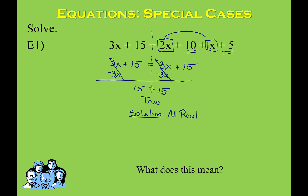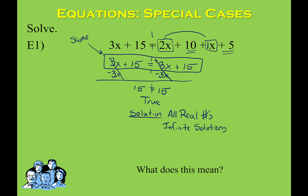The textbook calls it infinitely many solutions. What that means is that I can substitute any number into that equation — a negative number, a positive number, a square root, even pi — and the left and the right side will be the same. You could have recognized this earlier: 3x plus 15 will always equal 3x plus 15 no matter what you substitute in for x, because you're doing 3 times x plus 15 on both sides.